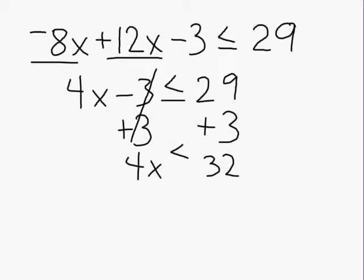Now we simply drop down our inequality sign and we have to do a little bit more work by getting rid of the coefficient of 4. Because 4 and x are being multiplied, we do the opposite, which is to divide by itself. And when you divide anything by itself, you get positive 1. That gives us our goal, which is to get positive 1x all by itself.